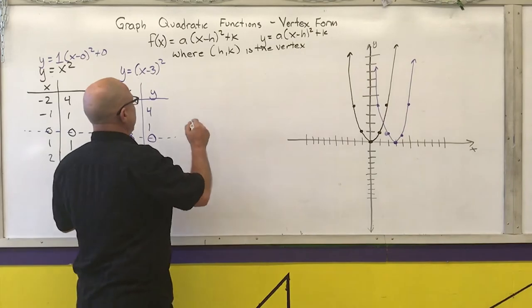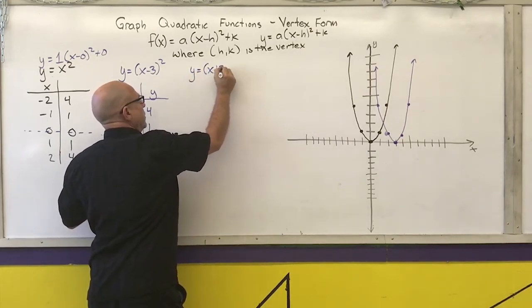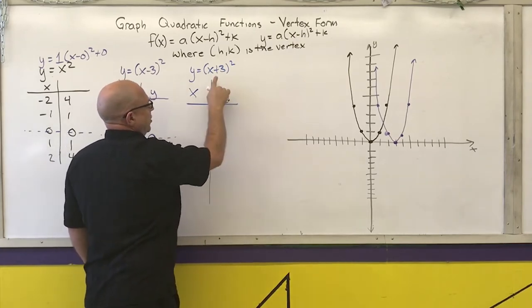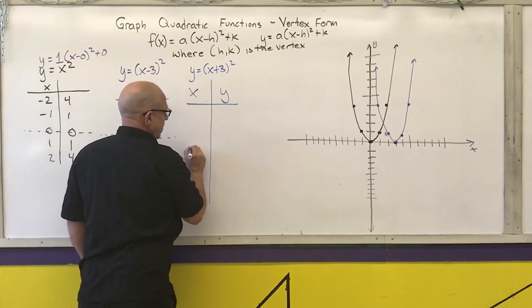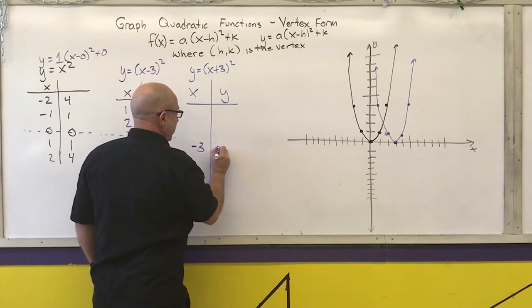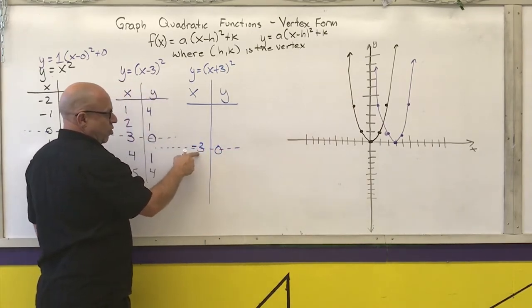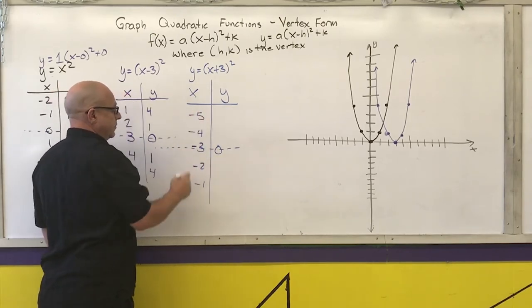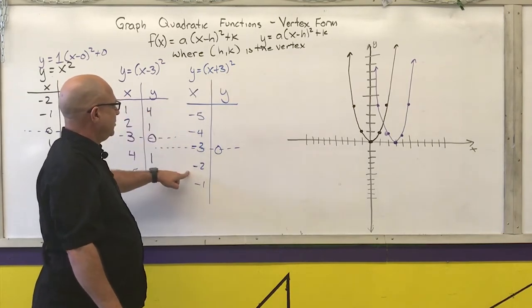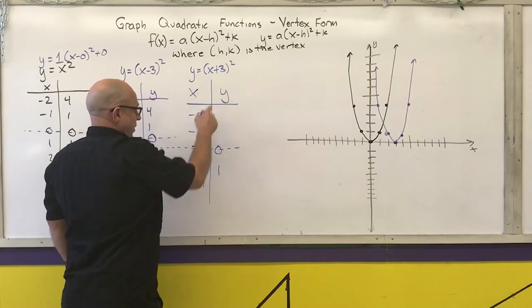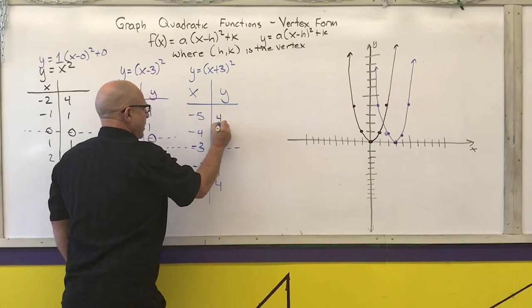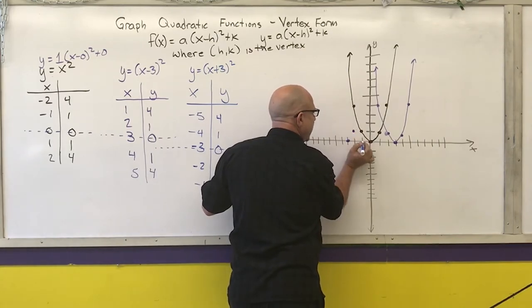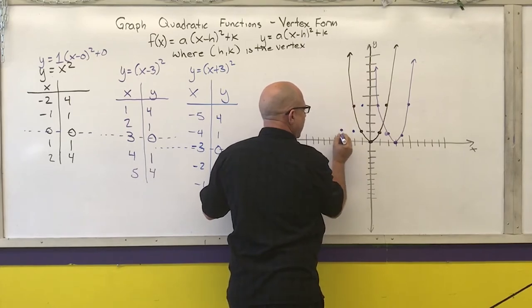Next one I'm going to do is y equals x plus 3 squared. What number makes what's inside 0? That would be negative 3, since negative 3 plus 3 is 0, and 0 squared is 0. Adding 1 gives negative 2, then negative 1; going the other direction gives negative 4, negative 5. Computing: negative 2 plus 3 is 1, 1 squared is 1; negative 1 plus 3 is 2, 2 squared is 4. Using symmetry: points are (-3,0), (-2,1), (-1,4), (-4,1), (-5,4).